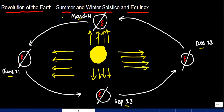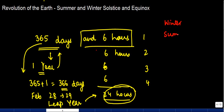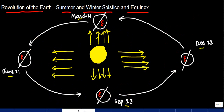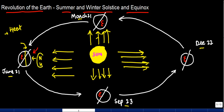Coming back to the main topic — usually we say there are four seasons in a year: winter, summer, spring, and autumn. These happen because the position of the Earth changes. On June 21, the rays of the Sun fall on one half of the Earth, so that half is going to have more heat. This means it will be summers in the northern hemisphere.